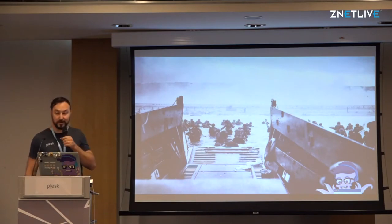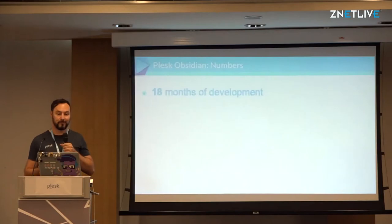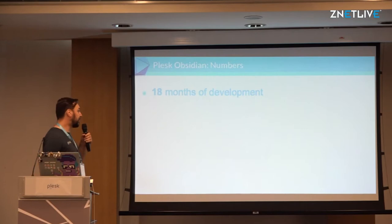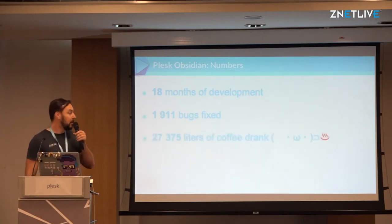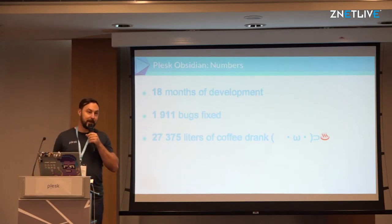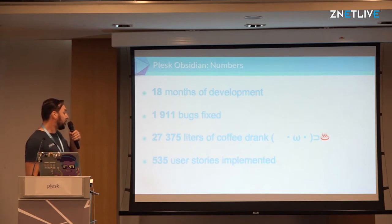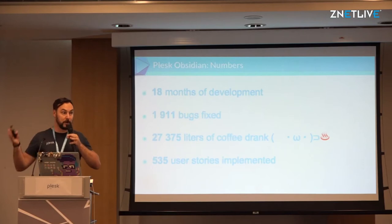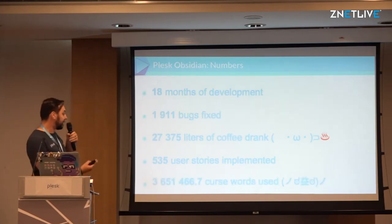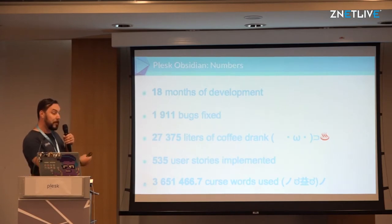Plask Obsidian is conquering the box office as we speak, and it would be strange to not use it as the main example. Let's go through some numbers: it's been in development for 18 months, we fixed 1,911 bugs, we drank 27,375 liters of coffee according to stats from our office coffee machine, and we implemented 535 user stories — which, if you don't know the dev lingo, is a small feature, improvement, or part of a bigger feature.